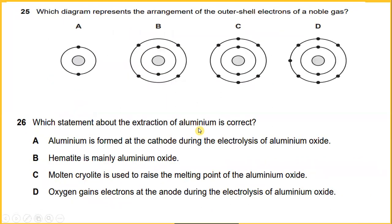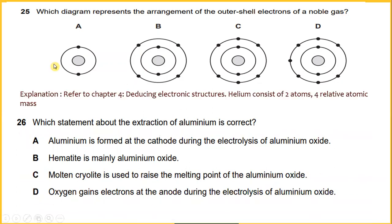Which diagram represents the arrangement of the outer shell electron on a noble gas? If you can see, the answer for chapter A is helium. Refer to chapter 4. The Lewis electronic structure helium consists of two atoms and four relative atomic mass. So the answer will be A.